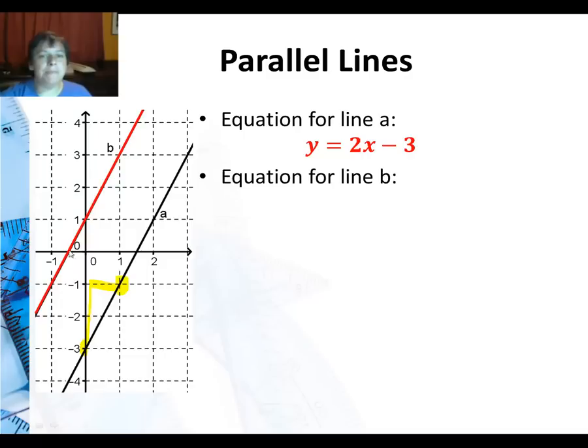For line B, the same thing. I find the y-intercept, which is one. And here's another point. And we go up two over one. So the equation of the line is y equals 2x plus 1. The rise is two. The run is one. That gives me the two here. And this positive one is the y-intercept.